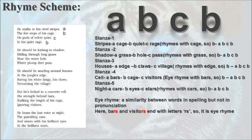Similarly, in stanza 3, 'houses' would be A, 'edge' would be B, 'class' would be C, and 'village' — as it rhymes with 'edge' — would be B again. So the rhyme scheme would be ABCB.